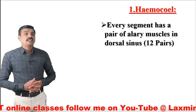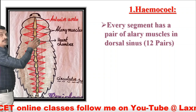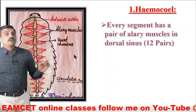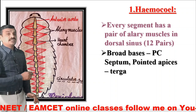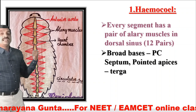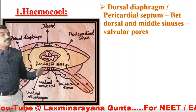Every segment of cockroach has a pair of alary muscles in the dorsal sinus — there are twelve pairs of alary muscles in total. These fan-shaped structures are called alary muscles, attached to the chambered heart. The broad bases are attached with the pericardial septum whereas the pointed apices are attached with the terga. These alary muscles help in the circulation of blood.